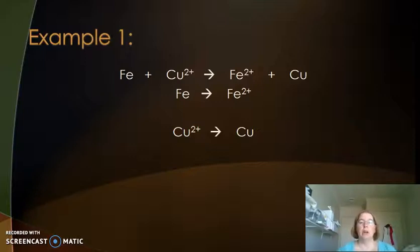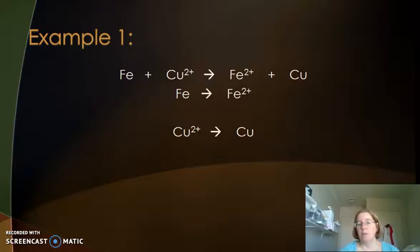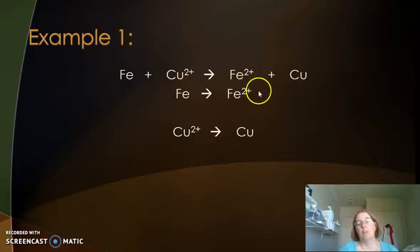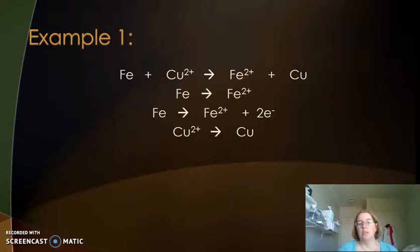To balance the first one, iron to iron 2+: are the irons balanced? Yes, there's one iron on each side. Are the oxygens balanced? No oxygens, don't need to worry about that. Hydrogens balanced? No hydrogens. Charges balanced? You will always need to add electrons — if you don't need to add electrons, it's not a redox reaction. We've got a zero charge on the left because iron metal has an oxidation number of zero, and a 2+ charge on the right, so we need to add two electrons to balance.